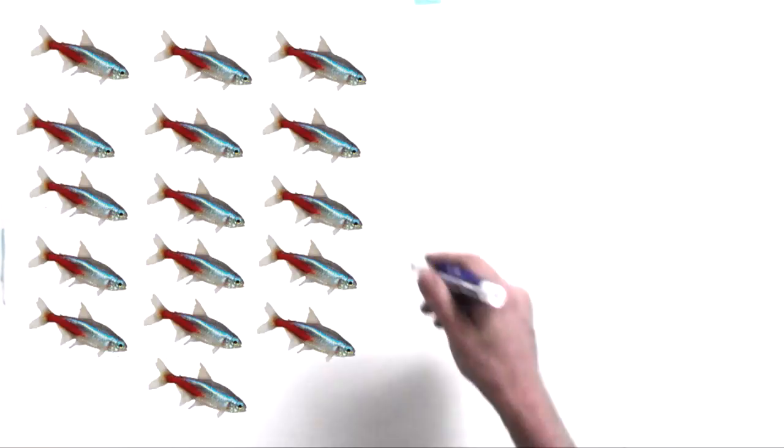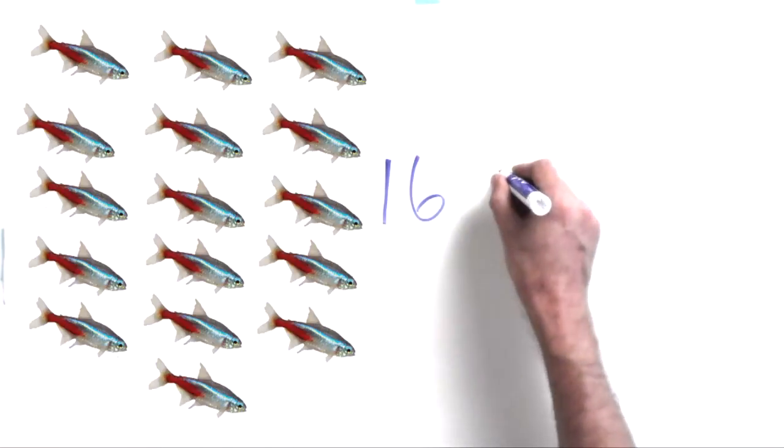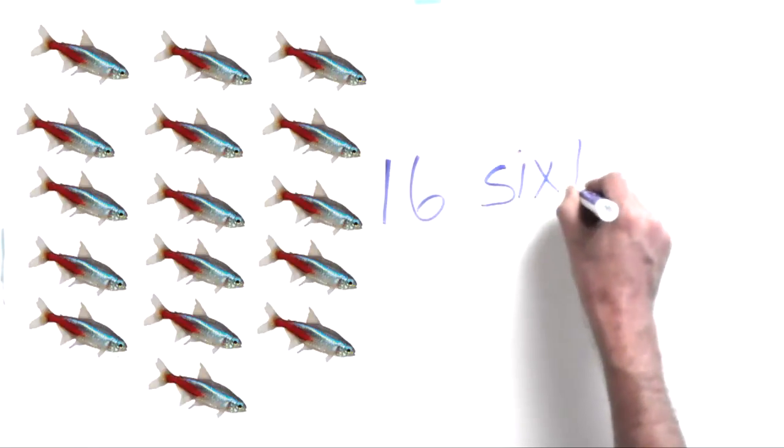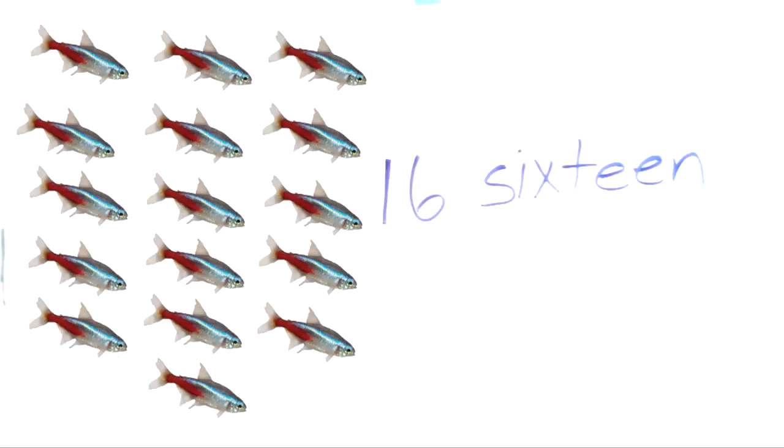16 fishes on the screen or in our fish tanks. So here's how we write the number 16, a 1 and a 6. And here's how we write the word 16. We write the number 6 and then put teen on the end. Sixteen. You probably could have guessed that. It's not too easy to write the numbers, is it?